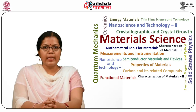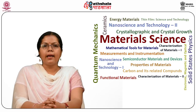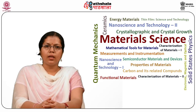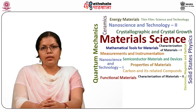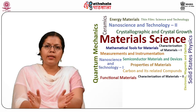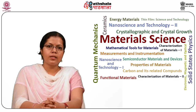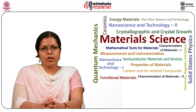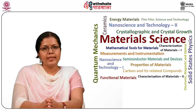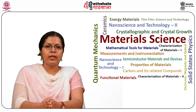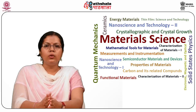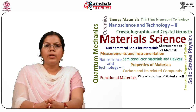Gas filled photocells were designed to overcome the low sensitivity of the vacuum type photocell. The sensitivity is improved by increasing the number of electrons produced at the cathode via gas discharge. Construction is similar to a vacuum tube, except that the gas filled photocell contains an inert gas, usually argon, at a low pressure of 1 mm of mercury.